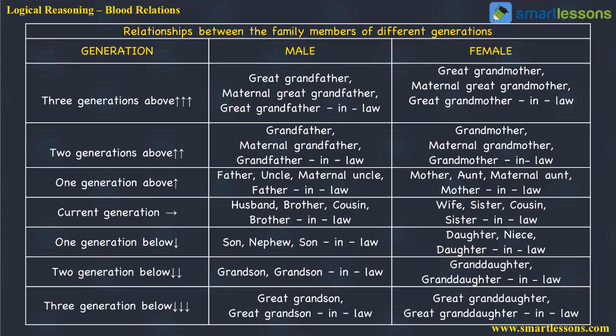One generation below could be a son, a nephew, or a son-in-law. A nephew could be your sister's son, brother's son, your wife's sister's son, or wife's brother's son. For female relationships one generation below, it could be your daughter, niece, or daughter-in-law. A niece could be your brother's daughter, sister's daughter, wife's brother's daughter, or wife's sister's daughter.